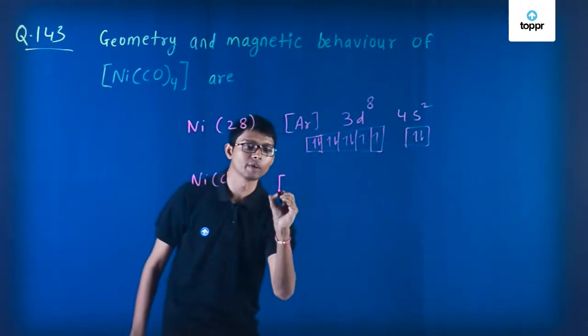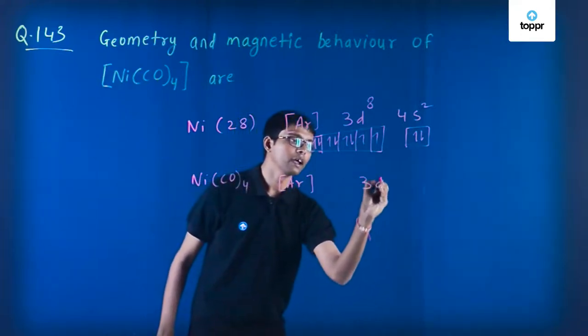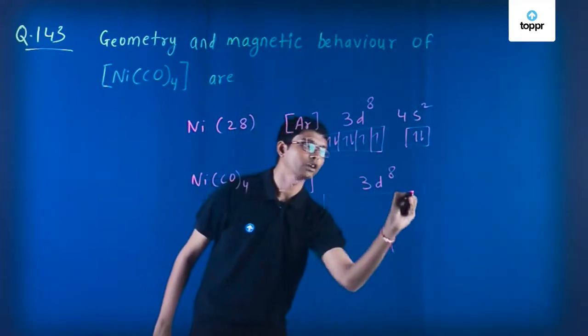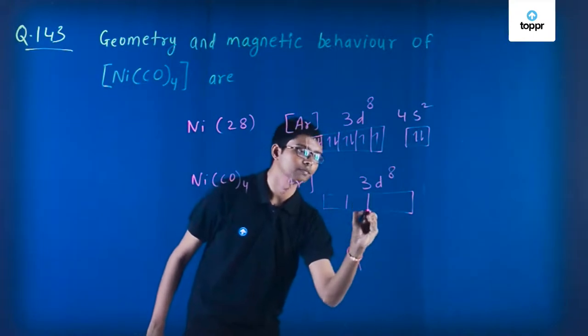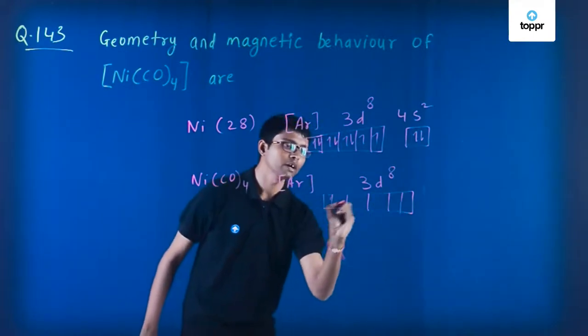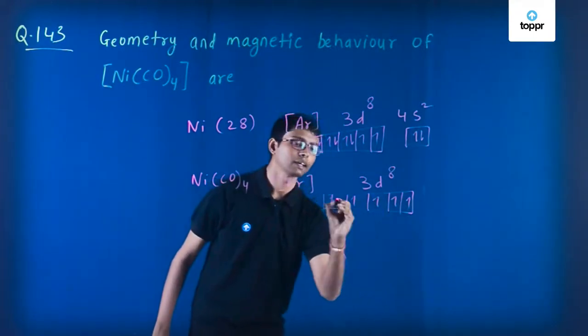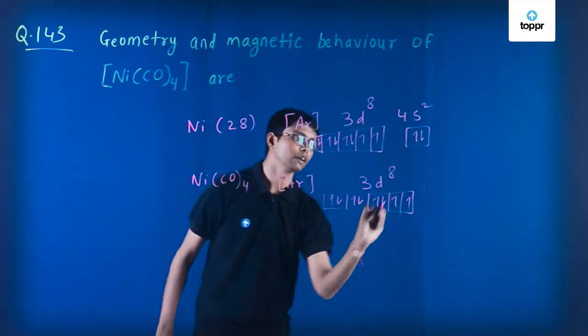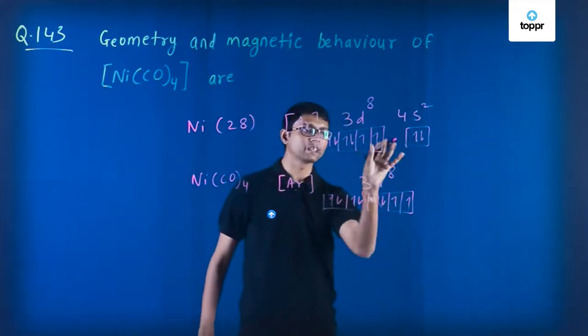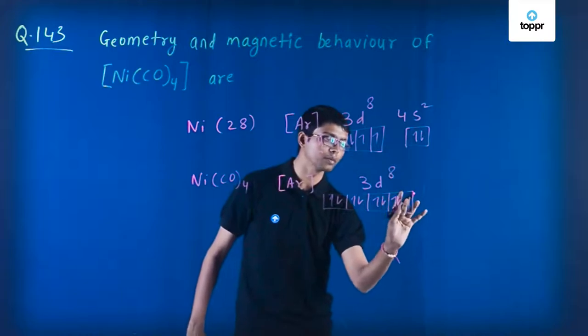So this compound will be like this now: 3d⁸, and the electronic configuration will be like this: 1, 2, 3, 4, 5, 6, 7, 8. What it's doing is pairing these electrons. This electron will be paired.